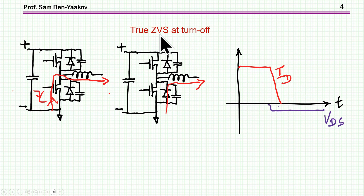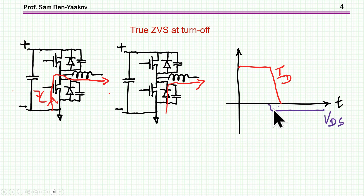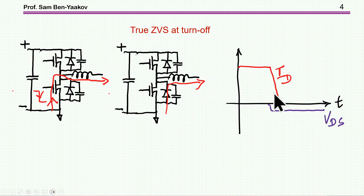Let me start with something very simple: true zero-voltage switching. Suppose a current is coming out, the transistor is conducting, and then you turn it off. When you turn it off, the current will now pass through the diode. The voltage on the transistor was zero; now when the diode is conducting, it's say one volt, and the transistor current is going down. So we have a low voltage — we call it zero — and the current is going down, so the overlap between current and voltage is really small, and the losses will be small. This is truly zero-voltage switching.